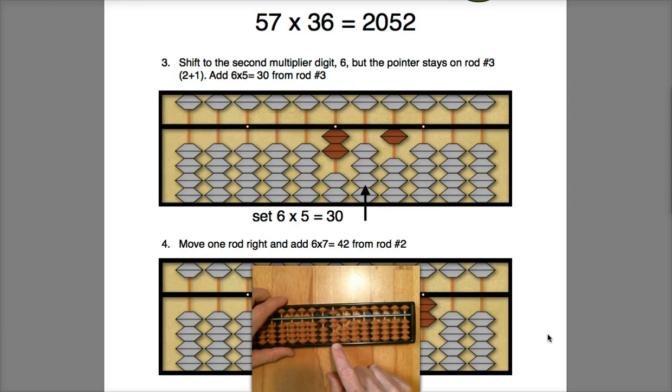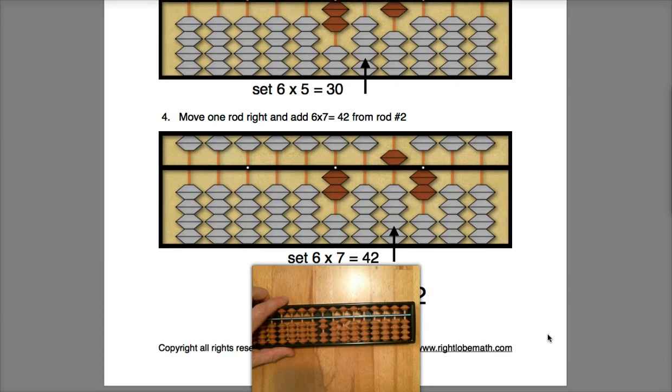Six times 5 is 30, so I'm going to enter 30 there. Then finally, I'm going to move one rod right and do 6 times 7, which is 42, and that gives me a final answer of 2,052.